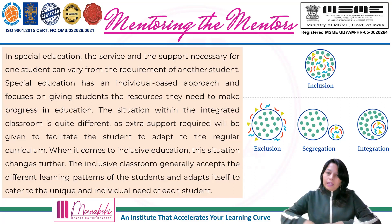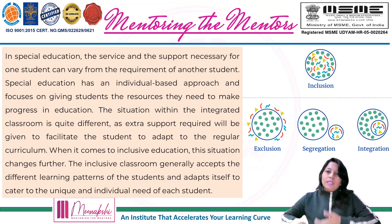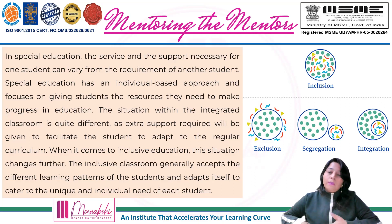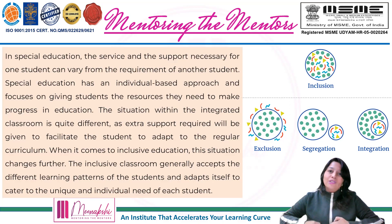And when we talk about integrated learning — integration meaning in this special mainstream school, the kids are studying, but they have been kept in a different corner. Some other special facilities are given. Their curriculum may be less than the others. They have some special activities organized. Their evaluation is different. So that is integrated education. And the top image is inclusion — there is no differentiation between the children with disability and children without disability.